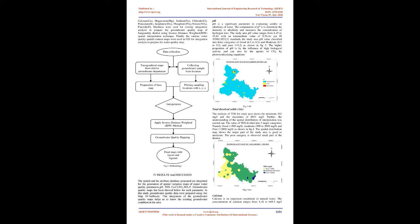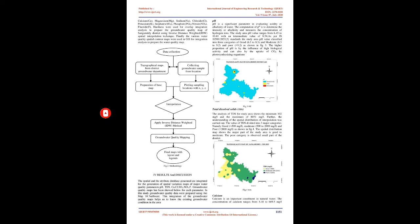Methodology: The methodology involves collection of water samples. The water quality database is analyzed and used as an attribute database for the preparation of thematic maps showing the distribution of various water quality parameters. Parameters such as pH, TDS, calcium (Ca), magnesium (Mg), sodium (Na), chloride (Cl), potassium (K), sulfates (SO4), phosphate (PO4), nitrate (NO3), fluoride (F), and hardness were used for overlay integration analysis to prepare the groundwater quality map of Sangareddy district using inverse distance weighted (IDW) spatial interpolation technique. Finally, the various water quality spatial contour maps were integrated in GIS for overlay analysis to prepare the water quality map.